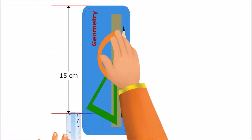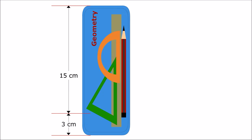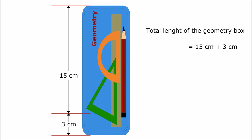Mother Ria continues: and from this point to this is 3 centimeters. So what is the total length of this box? Sid replies it is 15 centimeters plus 3 centimeters, which is equal to 18 centimeters. Mother Ria says absolutely correct, so its total length is 18 centimeters.